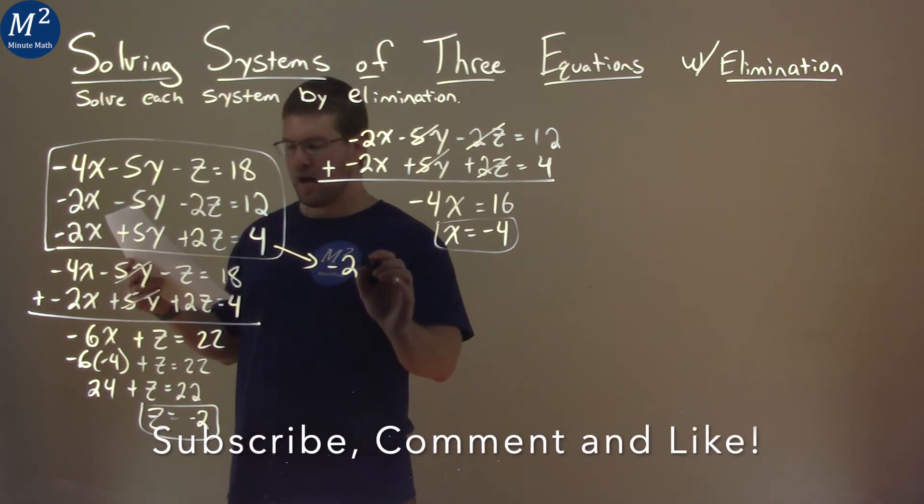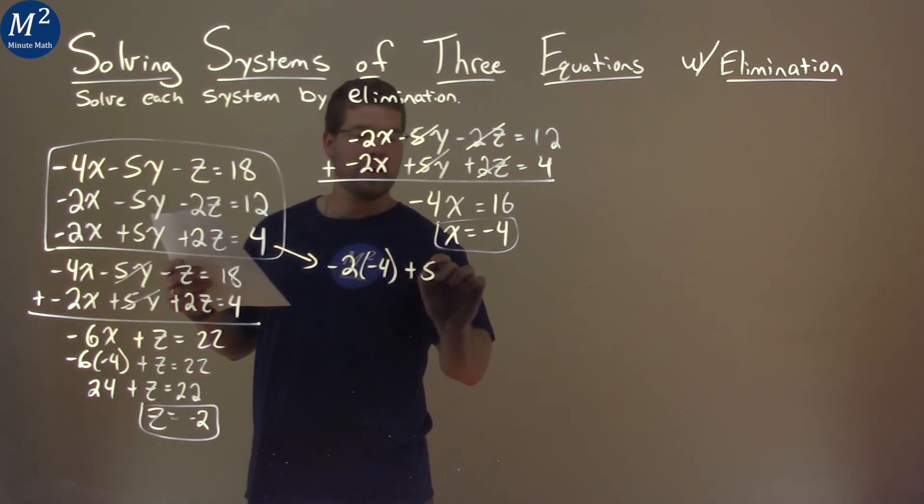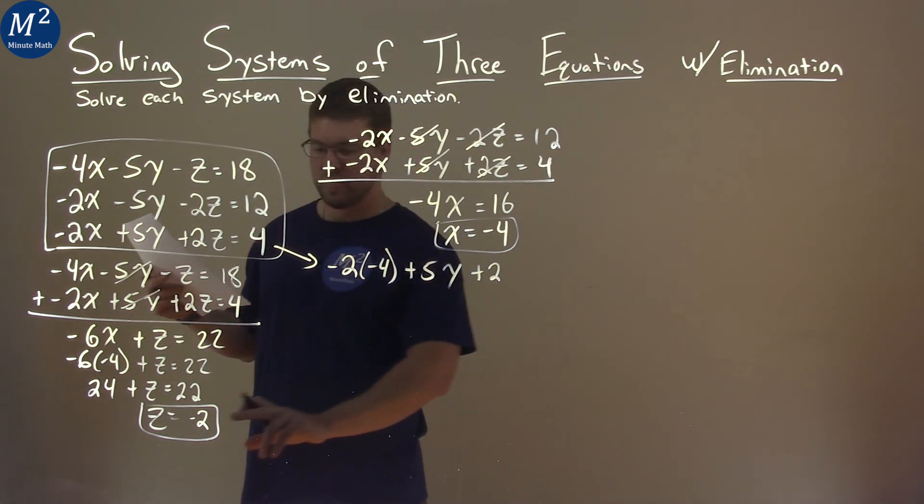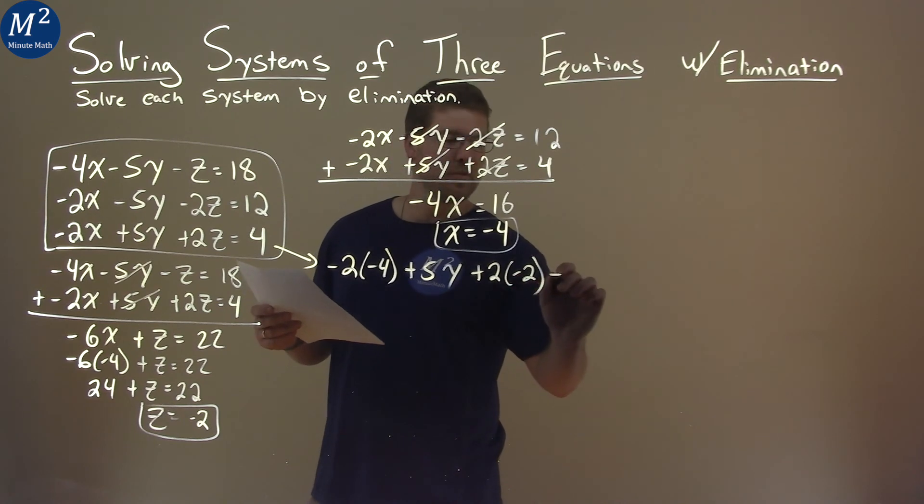Negative 2, instead of x, I'm going to put negative 4 in, plus 5y, we don't know the y, we're going to find that one, plus 2 times the z value, which is negative 2. And that's equal to 4.